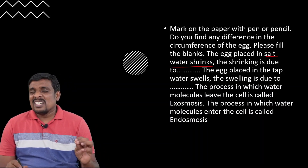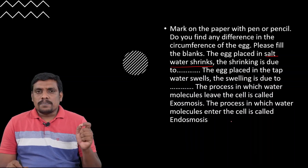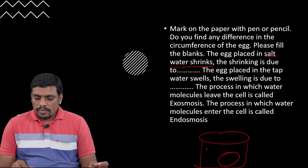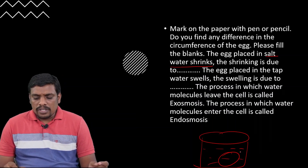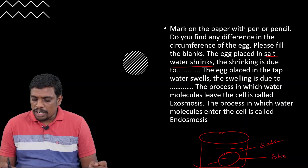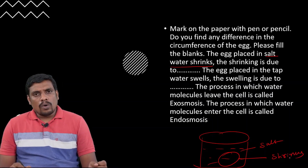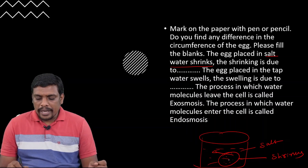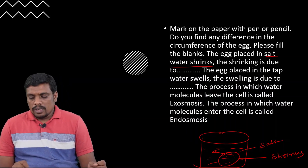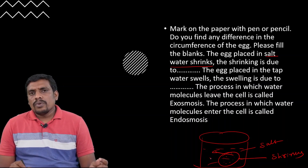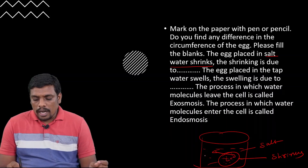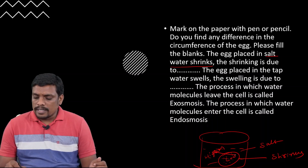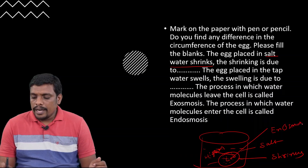What is the reason for this shrinking? The egg which is placed in the salt solution — there is an egg and there is water. The egg shrinks because the water molecules move from the egg to the salt solution — from lower concentration to higher concentration. So that is why it is considered as osmosis. What kind of osmosis? Endosmosis.